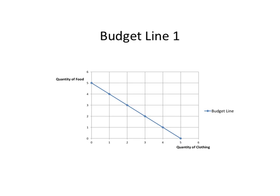In this diagram, I have plotted those consumption choices from the table. The horizontal axis shows quantity of clothing and the vertical axis shows quantity of food. Consumption choice A — buying no clothing — puts us at zero on the horizontal axis, and the maximum food is five units. Choosing one unit of clothing allows a maximum of four units of food. Plotting points A through F and joining them gives us a line called the budget line.